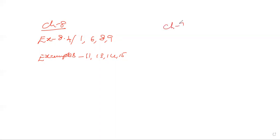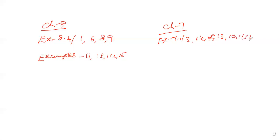Next, chapter number 7 — Coordinate Geometry. Exercise 7.1, question numbers 3, 13, 14, 15, 10, 11, 12. Exercise 7.2, question numbers 3, 4, 5, 6. Exercise 7.3, question number 2 — finding the k value for collinear points. Practice the k value problems.